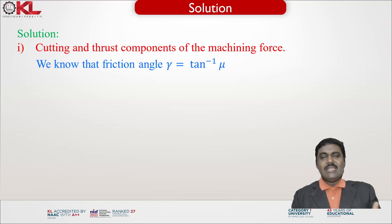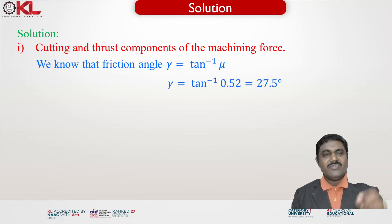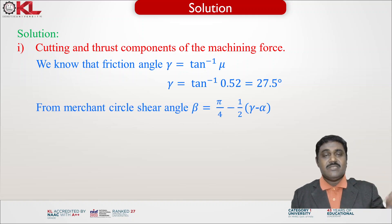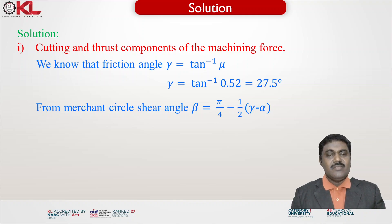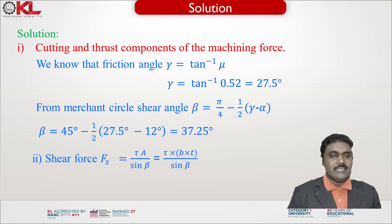We know that μ = tan γ, so the friction angle γ = tan⁻¹(μ) = tan⁻¹(0.52) = 27.5 degrees. From the merchant circle, the shear angle β is given by π/4 minus (γ − α)/2. Substituting γ and α gives the shear angle β = 37.25 degrees.